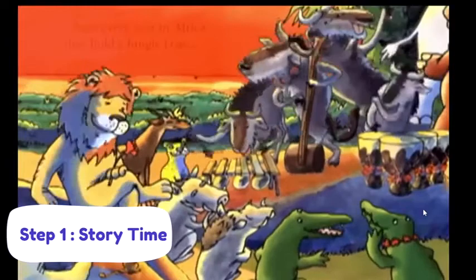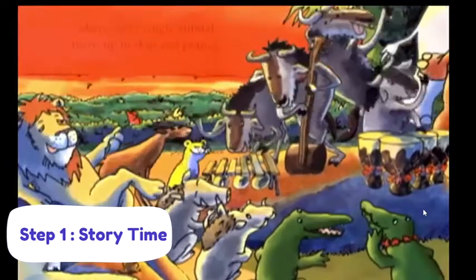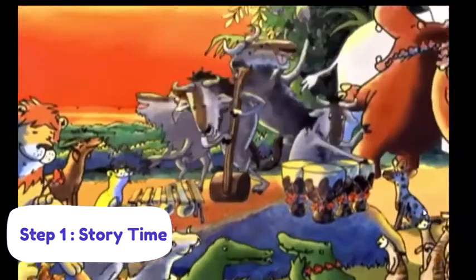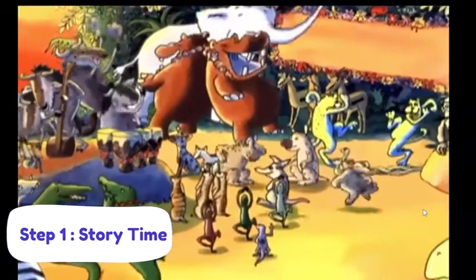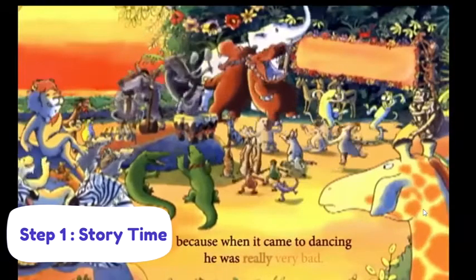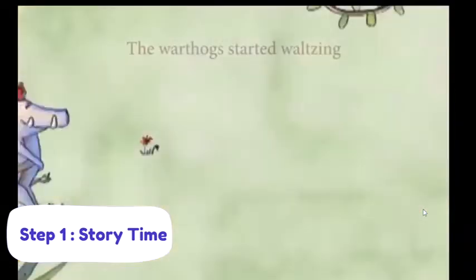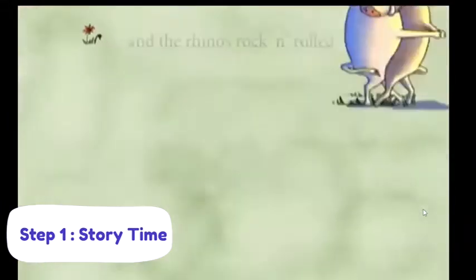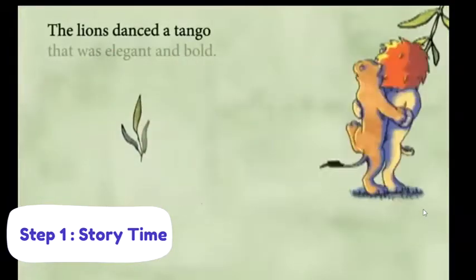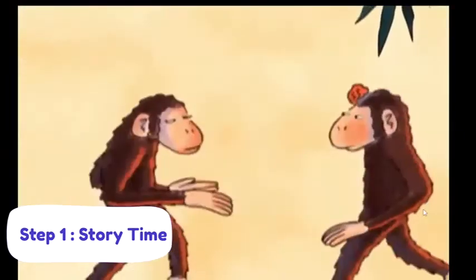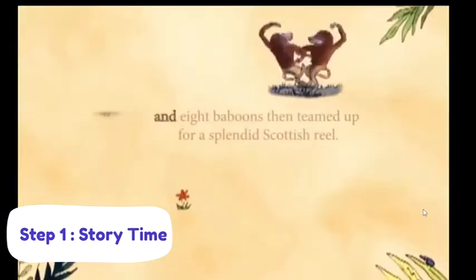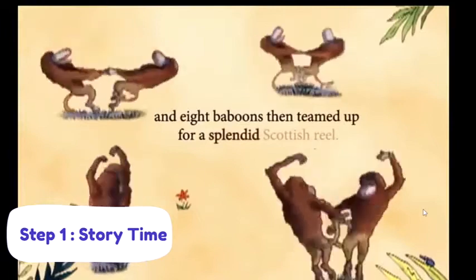Now every year in Africa they hold the Jungle Dance, where every single animal turns up to skip and prance. This year when the day arrived, poor Gerald felt so sad, because when it came to dancing he was really very bad. The warthogs started waltzing, and the rhinos rock and rolled. The lions danced a tango that was elegant and bold. The chimps all did a cha-cha, and eight baboons teamed up for a splendid Scottish reel.